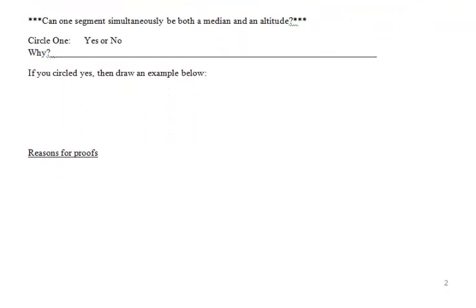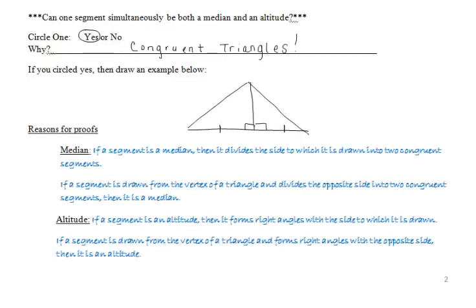Think about this question. Can one segment simultaneously be a median and altitude? The answer is yes. Why? We'll talk about this throughout the class, but it's because of congruent triangles. We'll get into a little bit more of this in class. But it is because of congruent triangles. So if you circled yes, please try to draw an example below. There you go. It should look something like that.